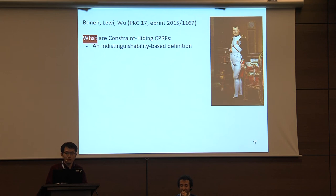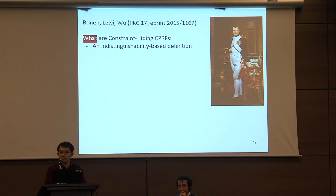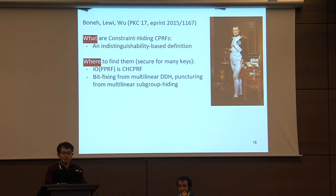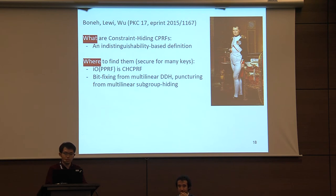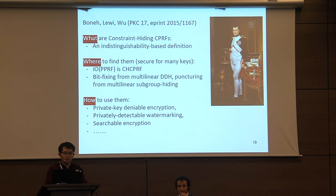In the work of Boneh, Lewko, and Wu, they ask and partially answer three philosophical questions related to constraint hiding constrained PRF: what is it (indistinguishability-based definition), how to construct it (IO of puncturable PRF directly already achieves hiding; for restricted constraint types, from multilinear maps), and how to use it (many concrete applications).